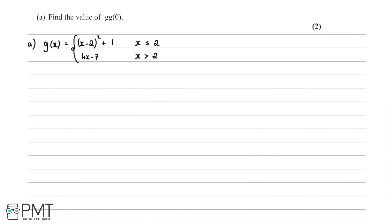In part a we're asked to find the value of g of g of 0. This means we need to work out g of 0 first, then apply g again — this is called composition of functions. We first note that when x equals 0, which is less than or equal to 2, g of x is going to be equal to x minus 2 squared plus 1.